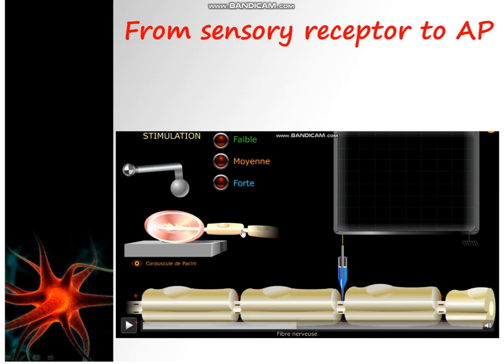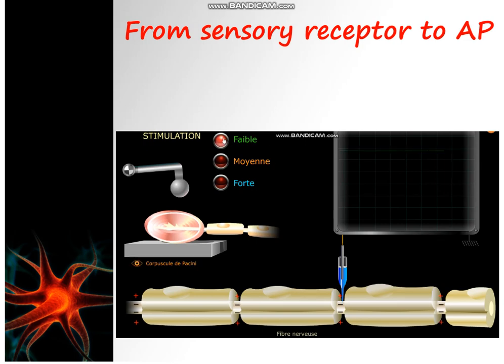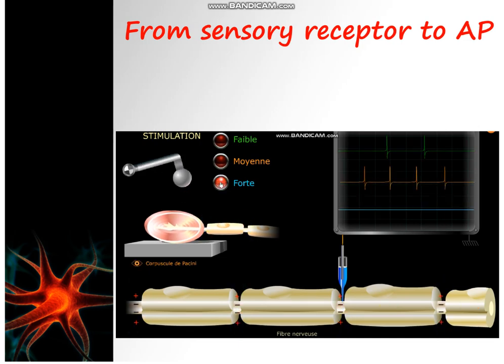The oscilloscope shows the obtained results. The messages are recorded during the same period of time. A weak pressure produces two action potentials of the same amplitude. Moderate pressure triggers four APs of the same amplitude. Strong pressure triggers six action potentials of the same amplitude. The amplitude of the AP is the same in all three messages.